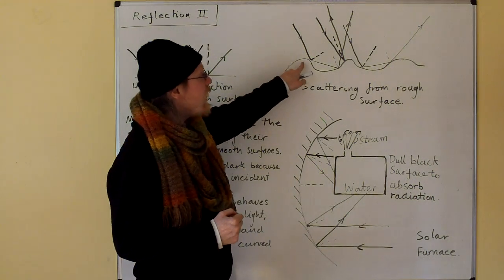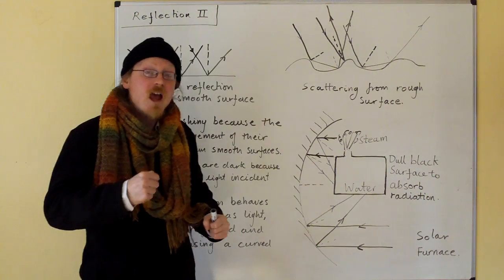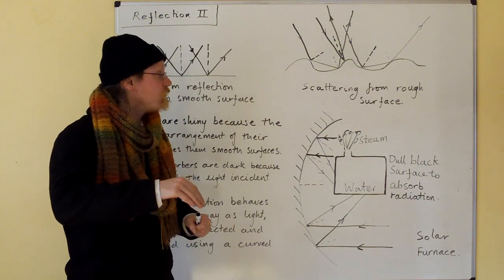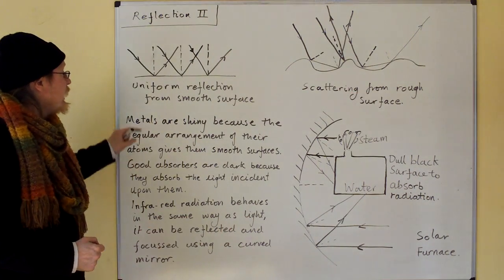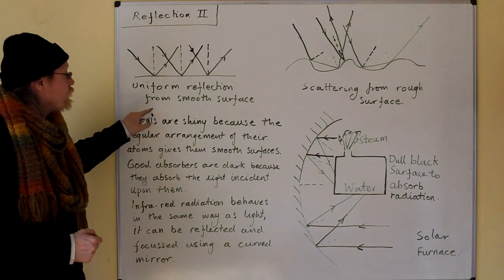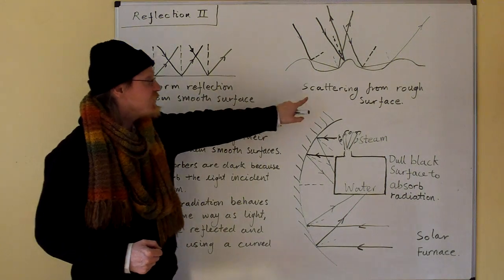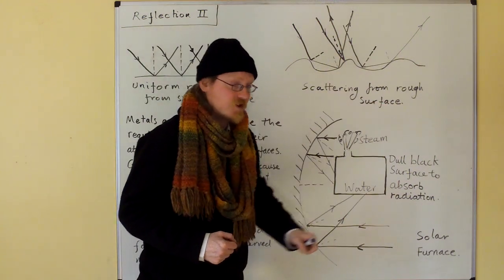Whereas if we have a rough surface, then light rays coming in the same direction will be scattered. So we get uniform reflection from a smooth surface and scattering from a rough surface.